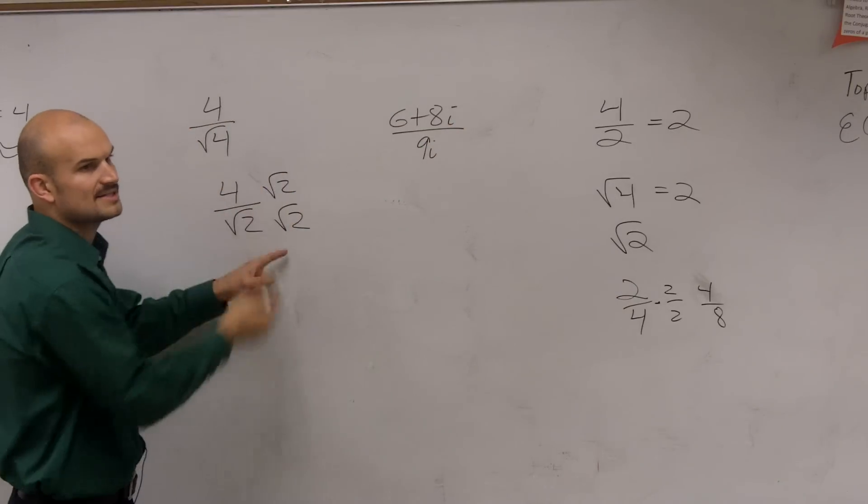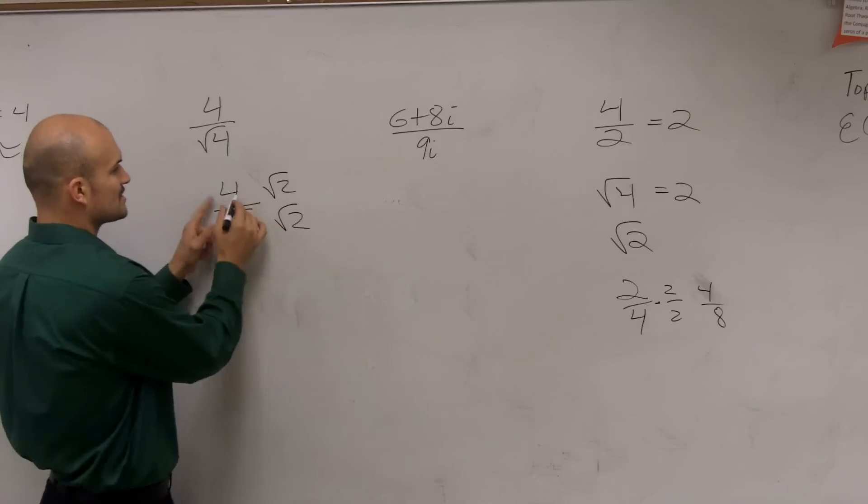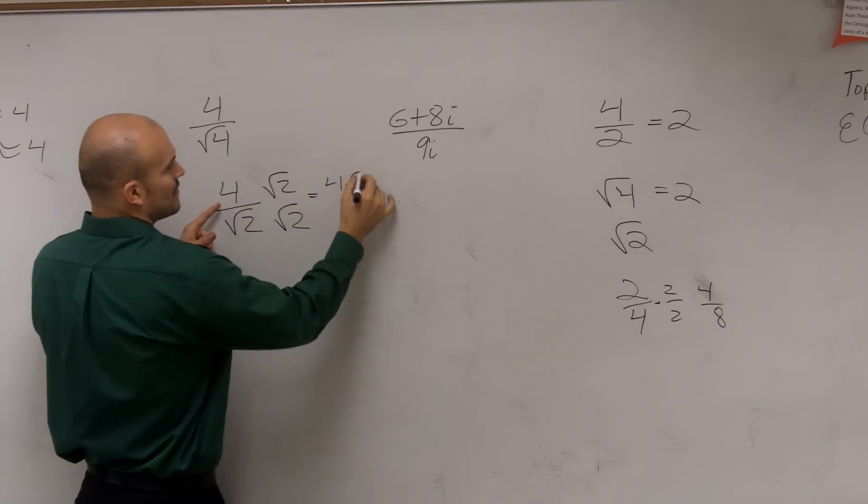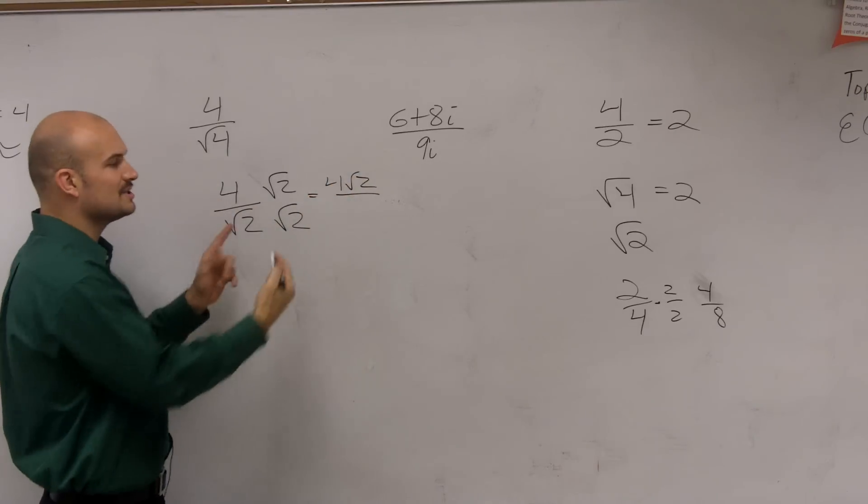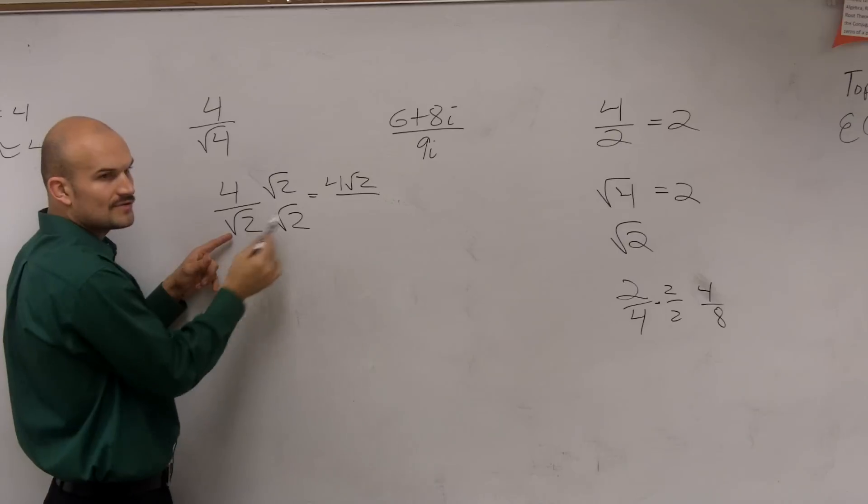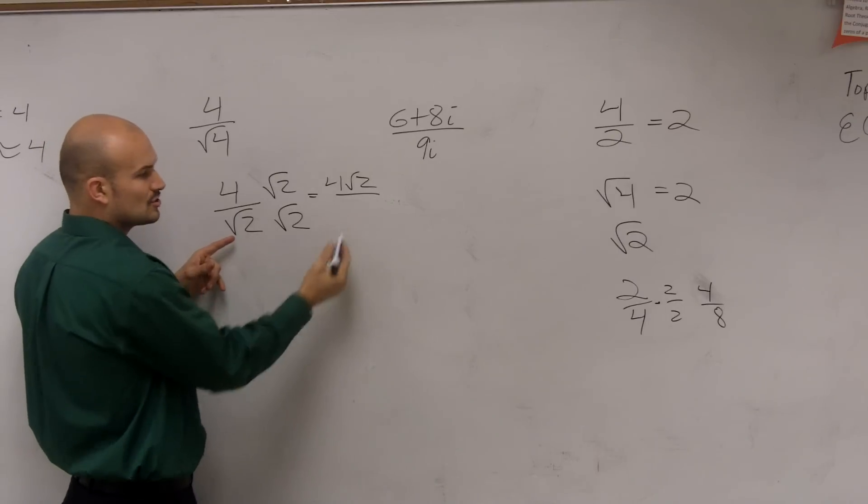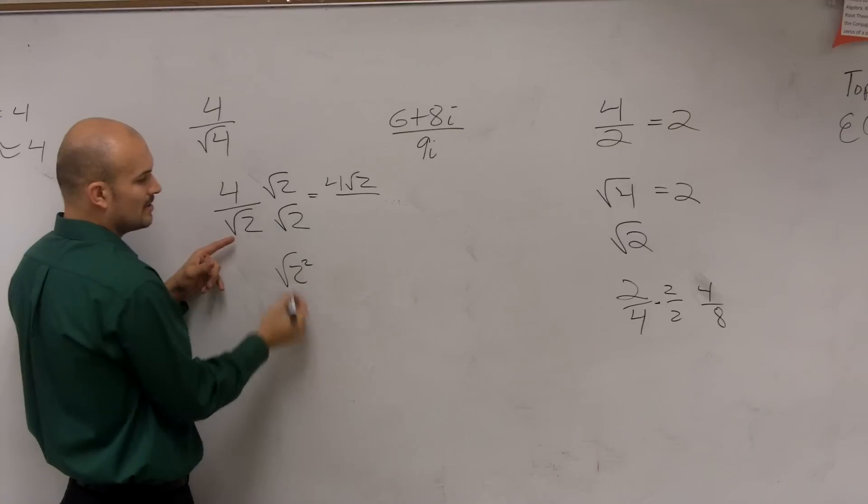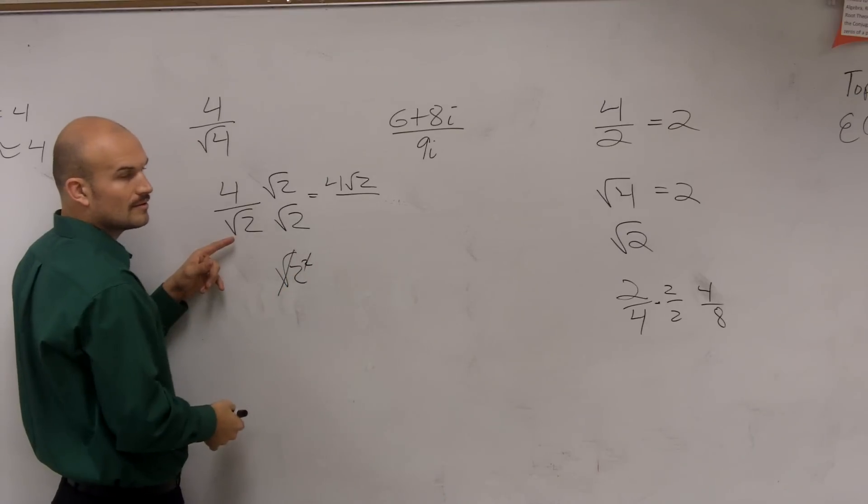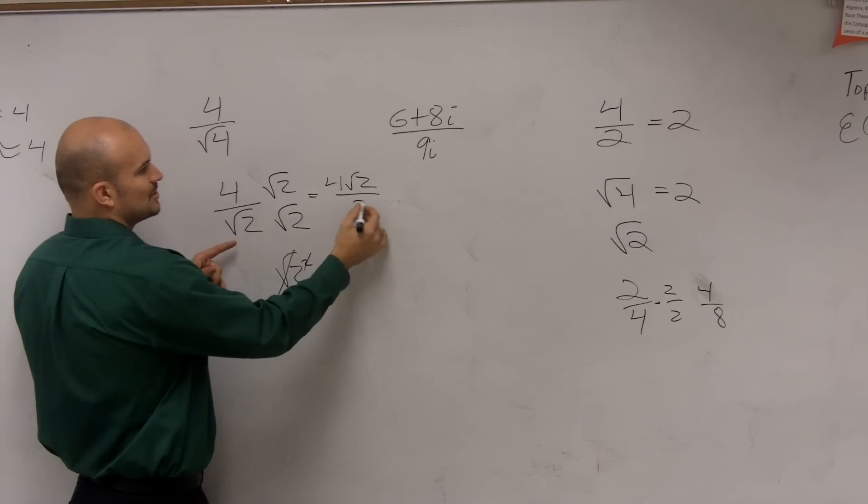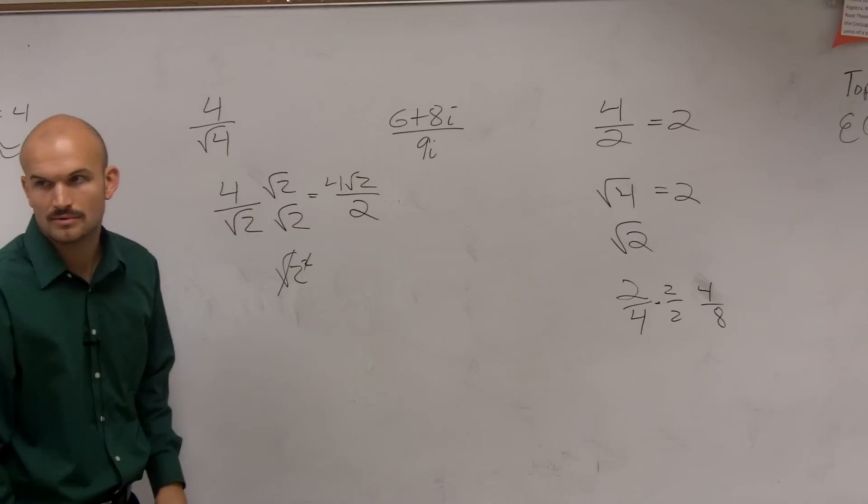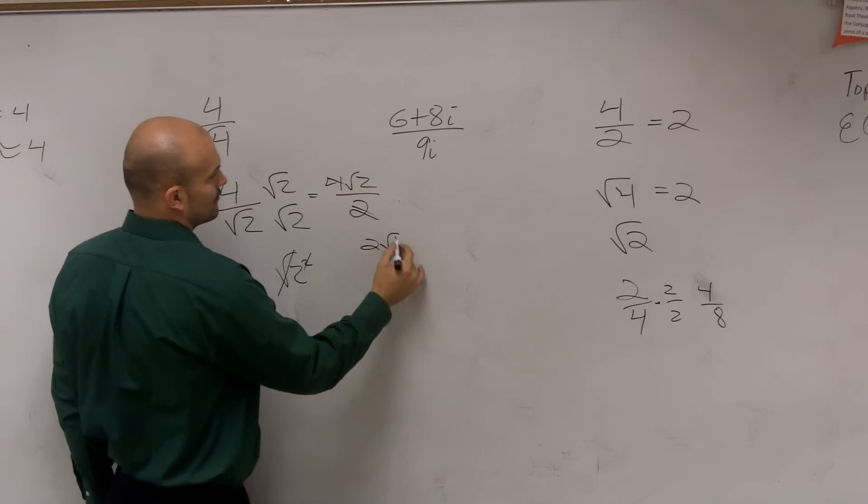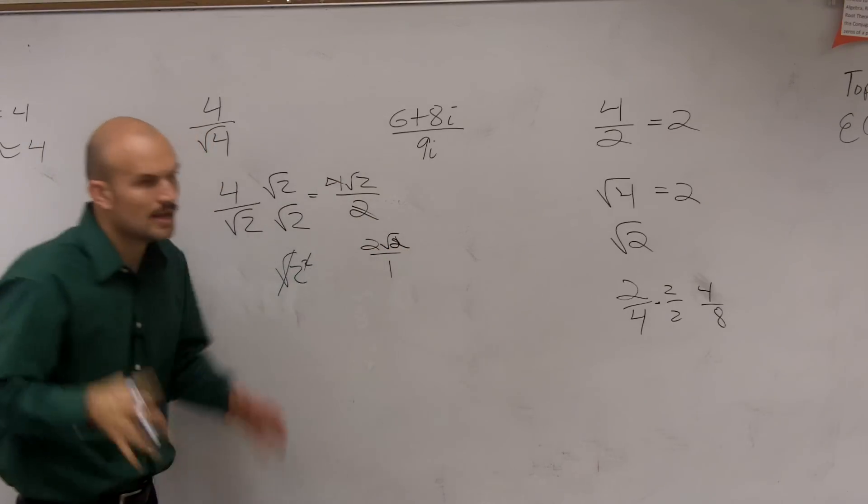So as long as you multiply by the same number on the top and bottom, what happens? You get 4 times radical 2, and then you're dividing by square root of 2 times square root of 2, which is the square root of 2 squared, which those go back to your radicand, which will be 2. Then you can obviously simplify this answer over 1.